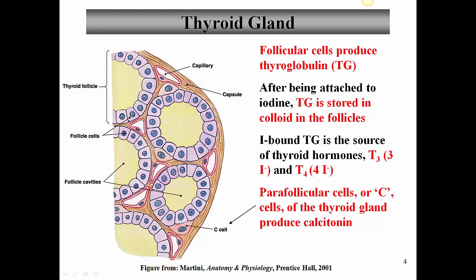There is one other additional cell type: the C cell, sometimes called parafollicular cells because they're outside the follicles. These produce a hormone known as calcitonin, which we'll discuss a little later. Its significance in humans is really not known, but we will discuss it.